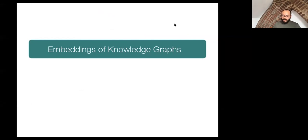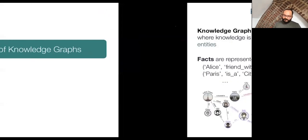The next topic is embeddings of knowledge graphs. One of the main problems is that knowledge graphs are incomplete, and it may be difficult to complete them using symbolic methods. In particular, we would like to exploit the regularities that occur in knowledge graphs to complete them.